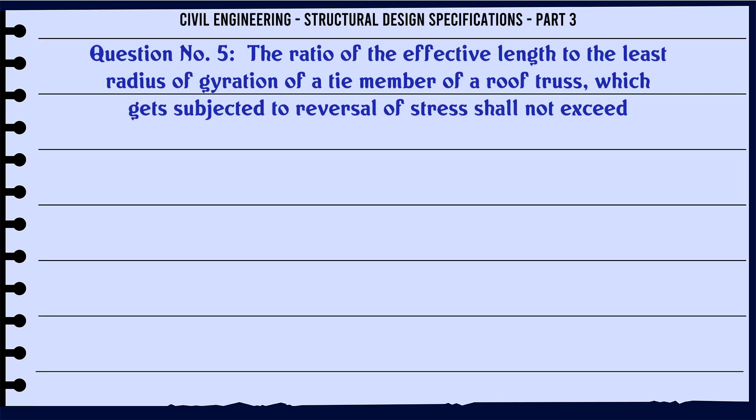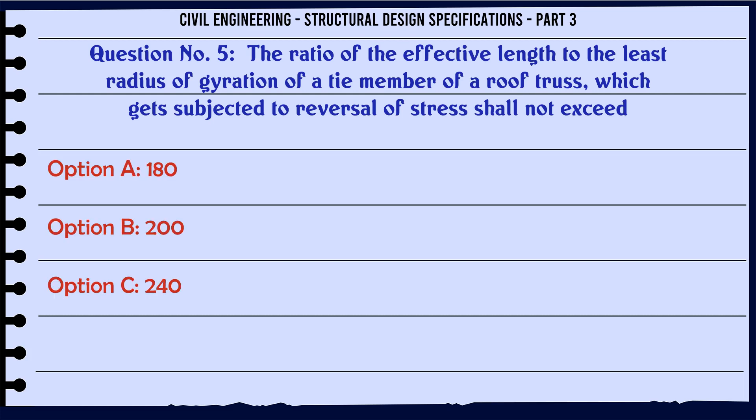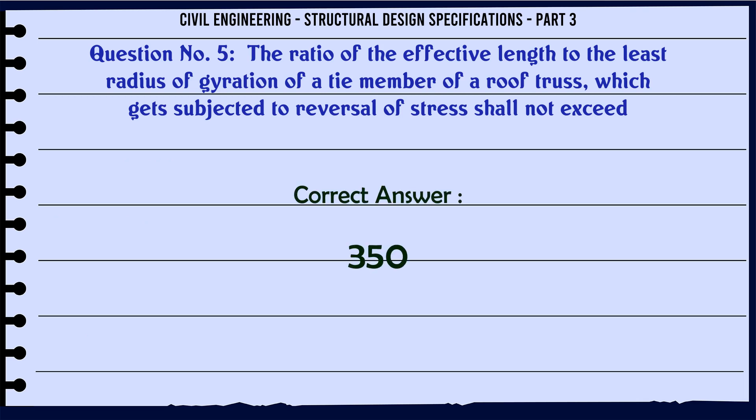The ratio of the effective length to the least radius of gyration of a tie member of a roof truss which gets subjected to reversal of stress shall not exceed: a. 180, b. 200, c. 240, d. 350. The correct answer is: 350.